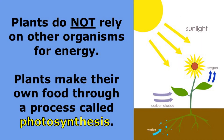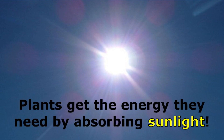But one very important thing to understand is that plants do not rely on other organisms for energy. Plants make their own food through a process called photosynthesis. Plants get the energy they need by absorbing sunlight.